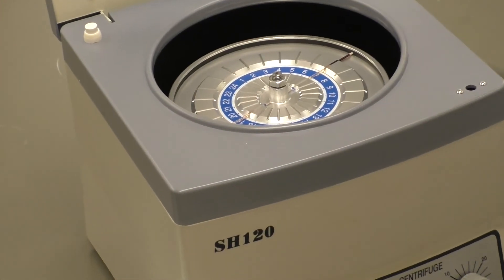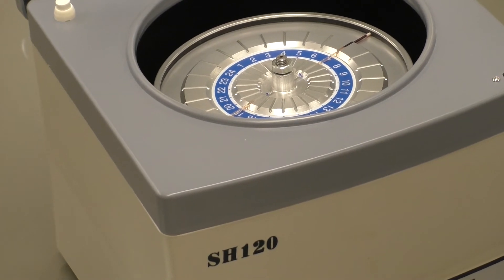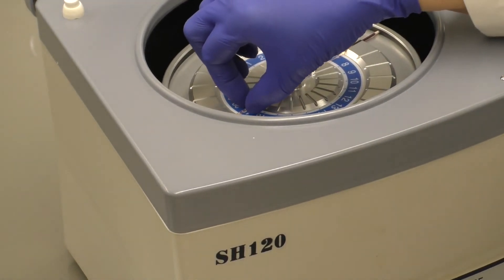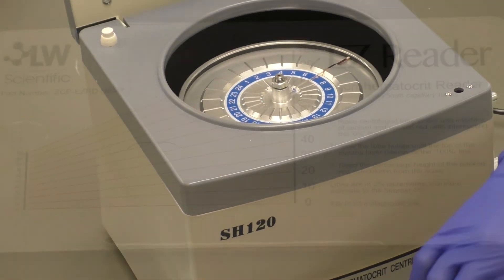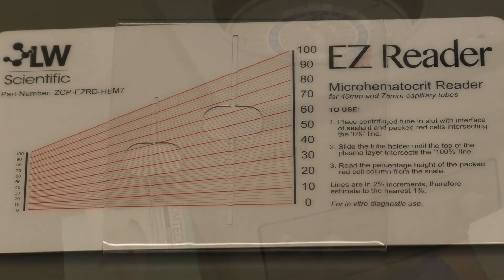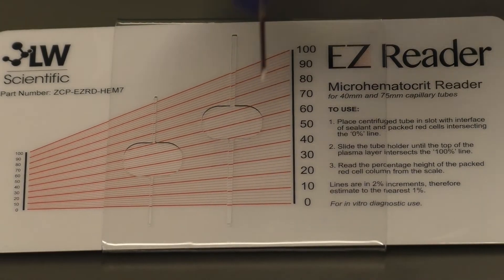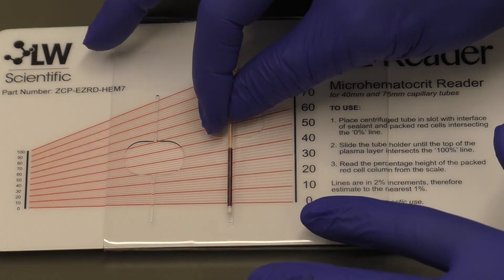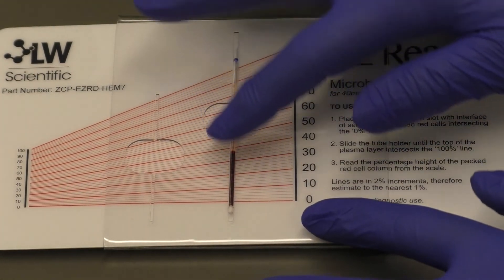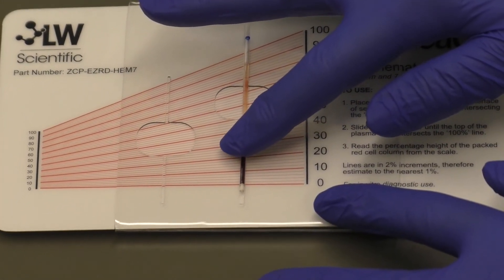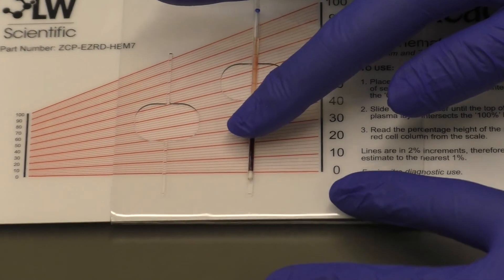Promptly read the hematocrit percent using the micro-hematocrit reader. Place the micro-hematocrit reader card on a countertop. Carefully place one of the micro-hematocrit tubes into the tube slot on the card, using caution not to disrupt the layers of cells.